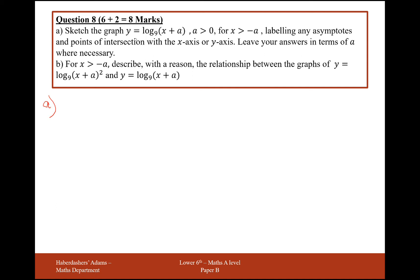So what it wants us to do is sketch the graph y equals log base 9 of x plus a, where a is a positive number, for all values x greater than minus a, labelling the asymptote and points of intersection on the x or y axis. Leave your answer in terms of a if necessary.